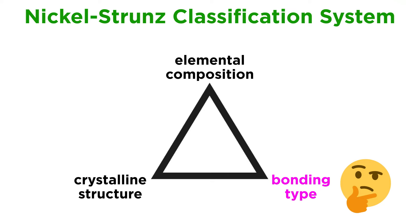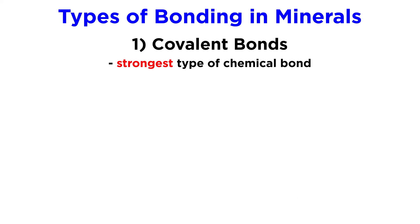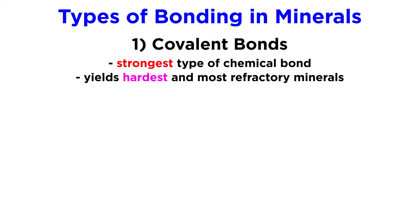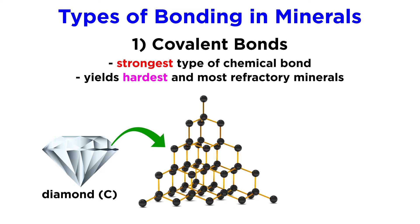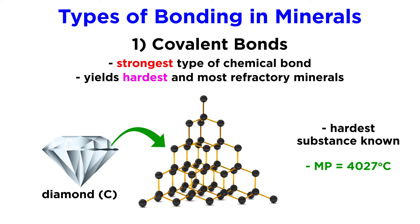Bonding types are of particular interest in mineralogy because the nature of a mineral's chemical bonds dictates many of its physical properties. Covalent bonds are the strongest type of chemical bond. Minerals with predominantly covalent bonds are the hardest and most refractory minerals. Diamond, which is composed of linked carbon tetrahedra, is the prime example of a covalently bonded mineral. It is the hardest substance known and has a melting point of over 4,000 degrees Celsius.